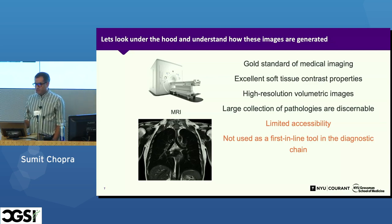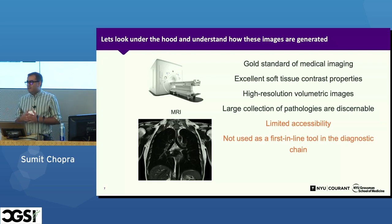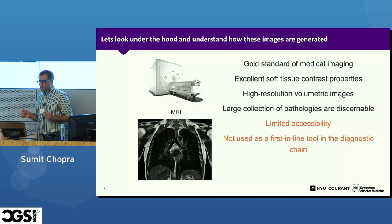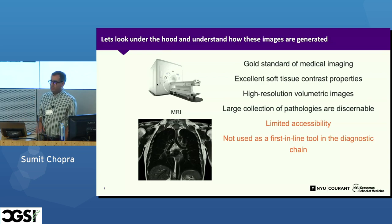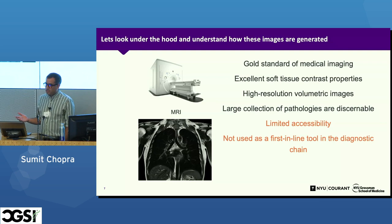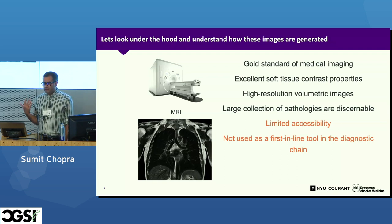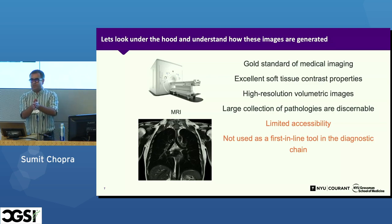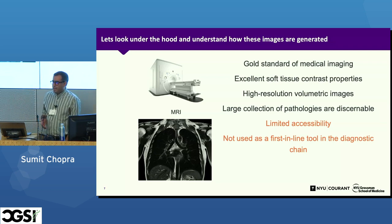The biggest reason MR is not used everywhere is very limited accessibility — it's simply a very expensive modality. The costs are rooted in three factors. First, the hardware is insanely expensive, on the order of millions of dollars. Second, it takes a lot of time to acquire the data: a typical brain scan could take 45 minutes to an hour, with the patient inside a claustrophobic tube subjected to loud noises. Third, you need a subspecialist radiologist to actually look at the images.